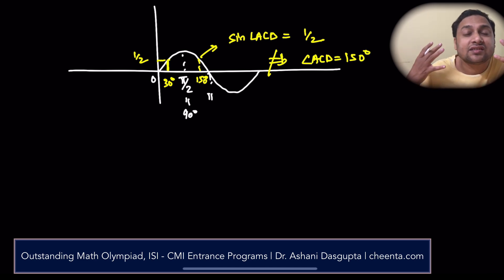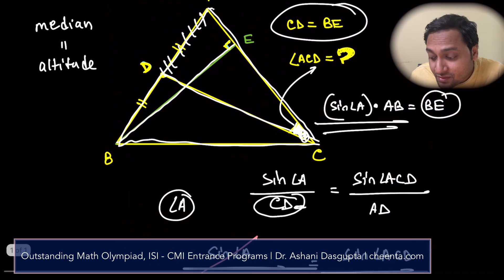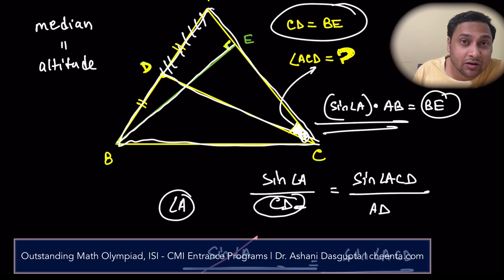So, can you tell me why sine of angle ACD equals half does not imply ACD is 150 degree? Why can we say it is not 150 degree? Can you give me an airtight argument in the comment section? It's very important. It's a subtle conceptual point. Just looking at the diagram, you can actually say, but you have to give me an argument. Mathematics is all about arguments.